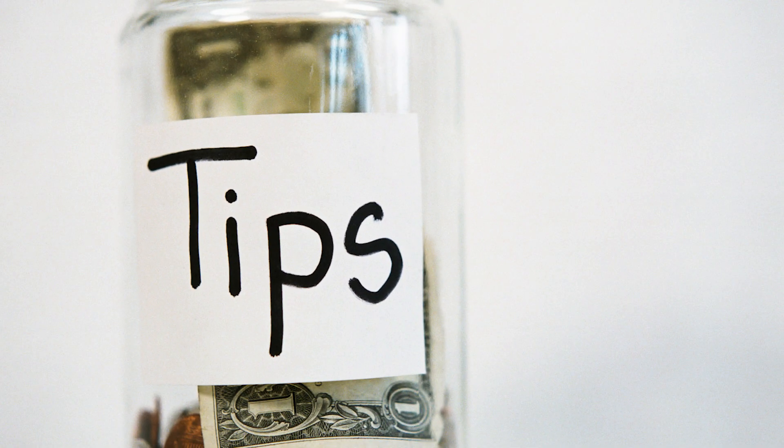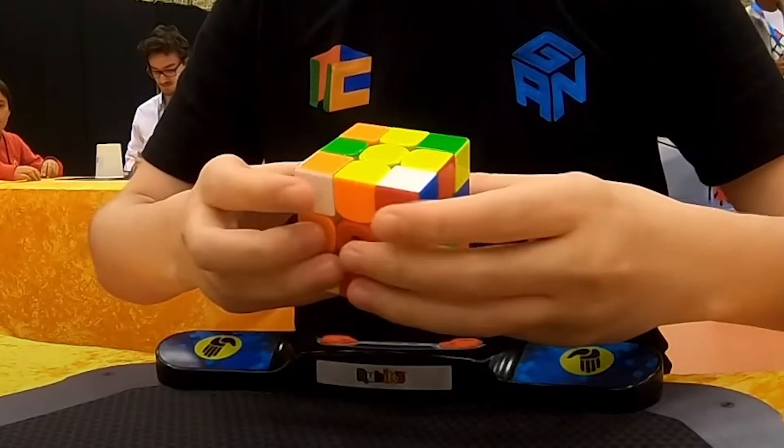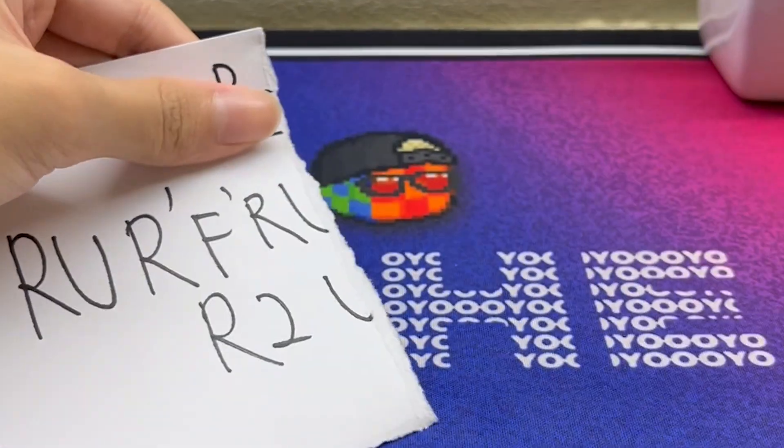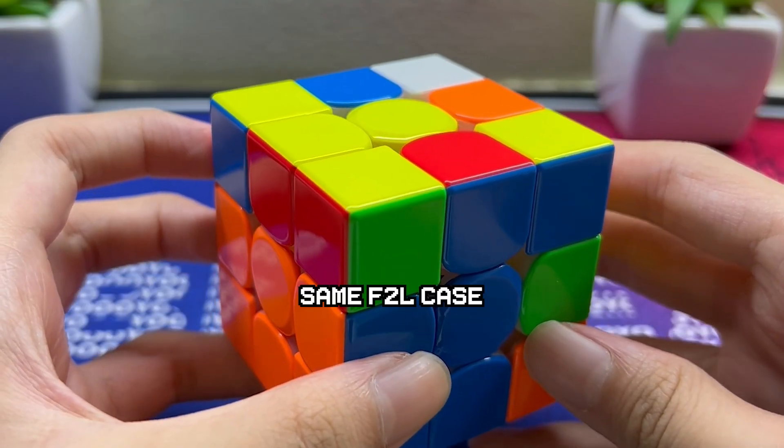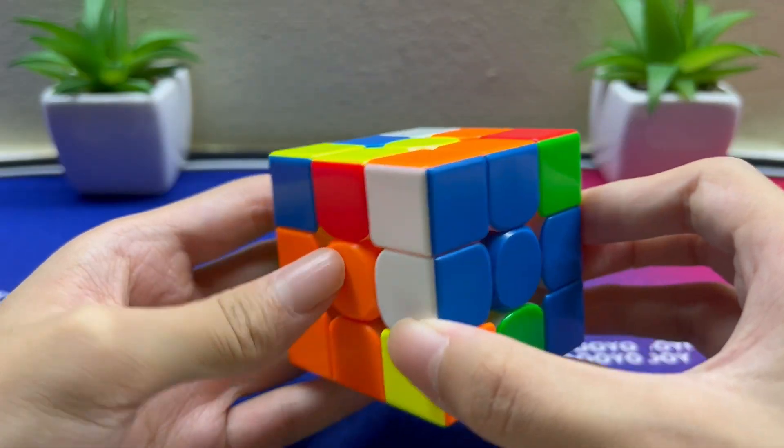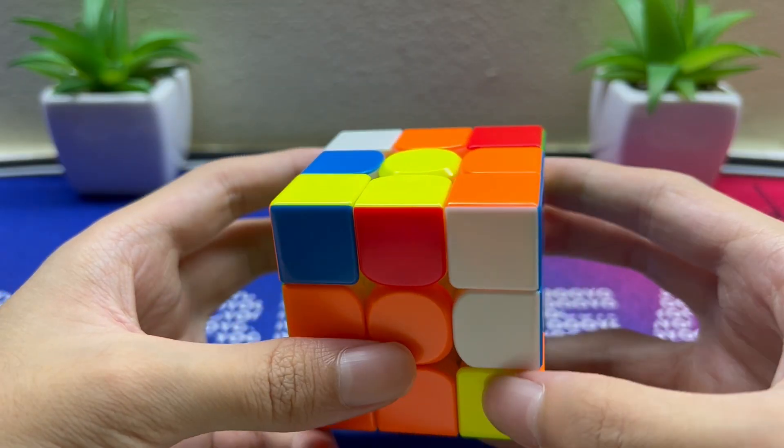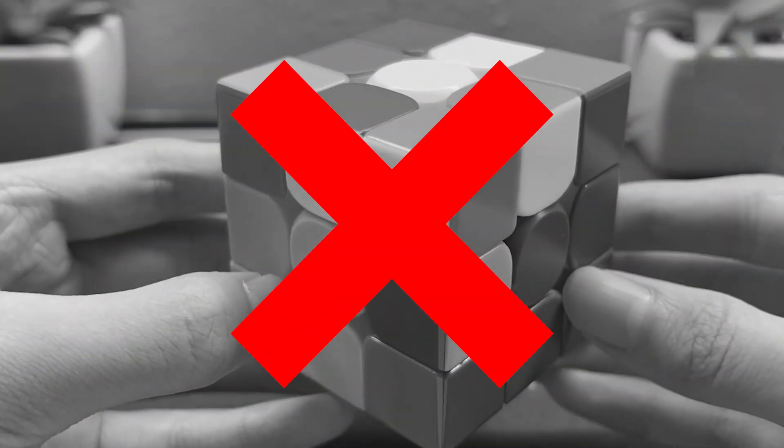But if you want to follow this tip, you will be solving pairs like top cubers without even needing to memorize algorithms. Trust me, using the same F2L case, by understanding that as long as the solved pair does not end up in the top layer, it will not be affected when forming other pairs.